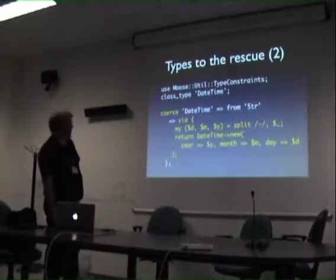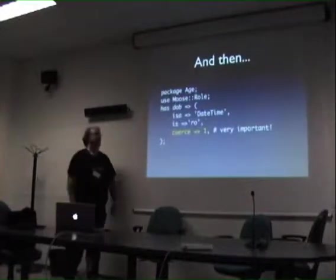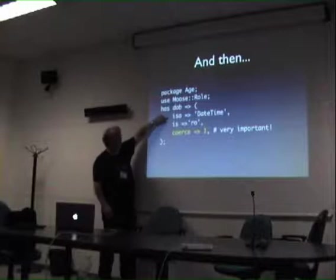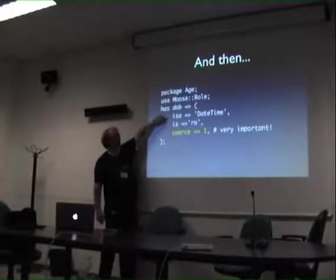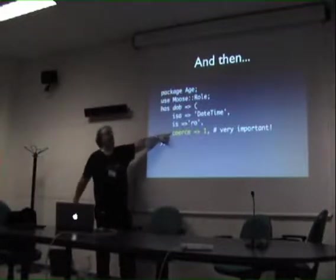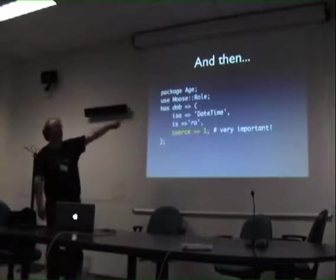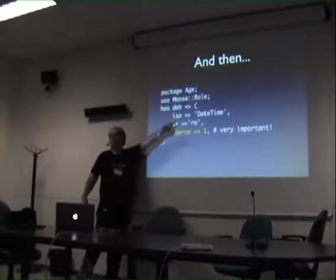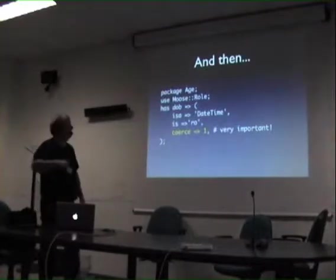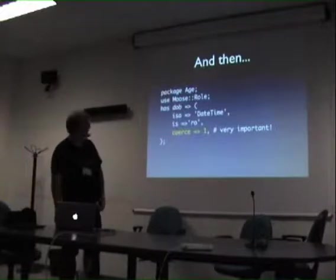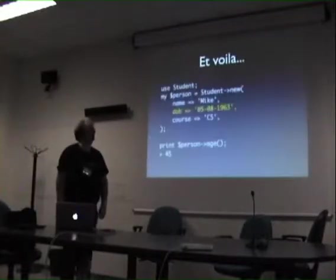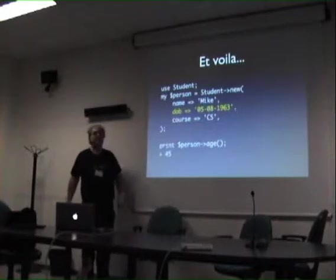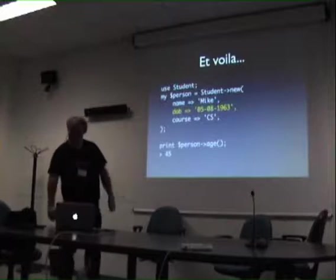There's one last thing to remember: when you define your object you now say `isa => 'DateTime'` - not `DateStr` - but you do say `coerce => 1`. If you don't say `coerce => 1`, nothing happens - you pass it that string and it gives you an error. If you say `coerce => 1`, it looks at the coercions defined for that type, and if the value you've been passed matches, it goes ahead and coerces it. This now allows you to say `my $person = Student->new(date_of_birth => '05-08-1963')`, print out the age, and it does the right thing behind the hood.